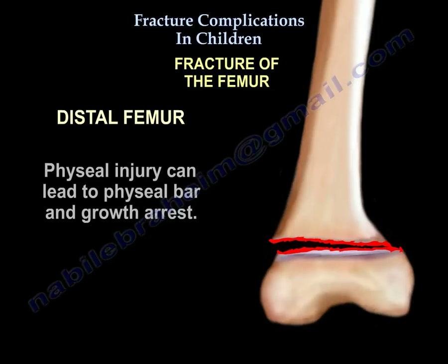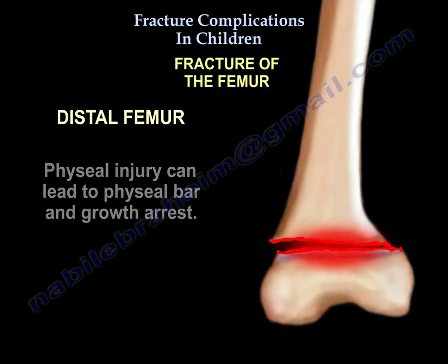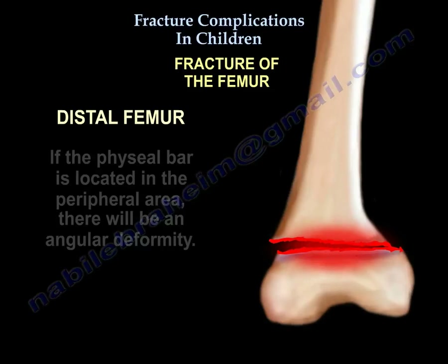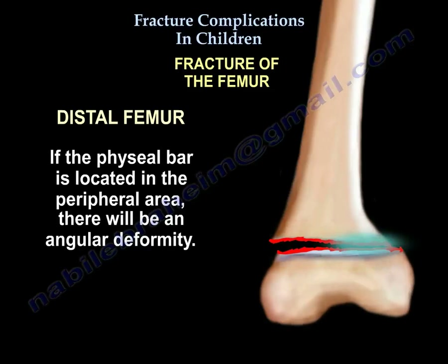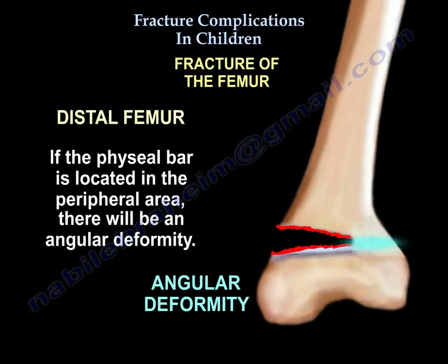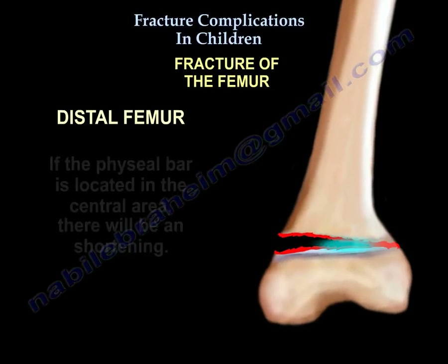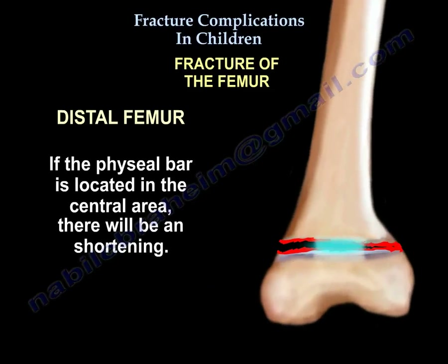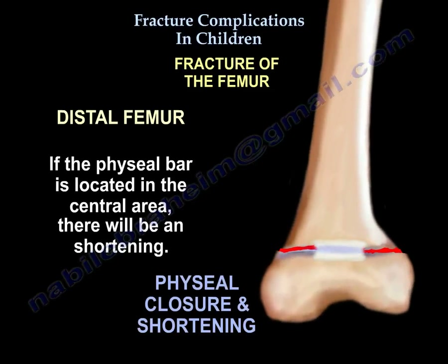Physeal injury can lead to a physeal bar and growth arrest. If the bar is in the peripheral area, you will get angular deformity. If the bar is central, you will get shortening.